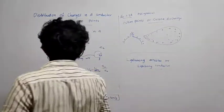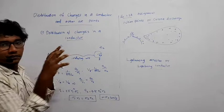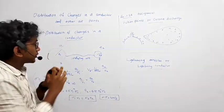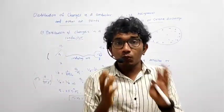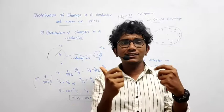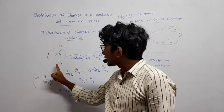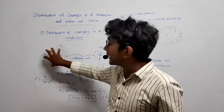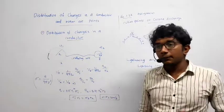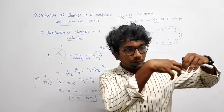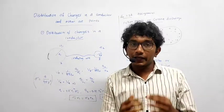When we give a total charge Q common to both of them, it will divide into Q1 and Q2. The criterion is that the potential at A and potential at B should both be equal, because charge will always flow from higher potential to lower potential until their potentials are equal.